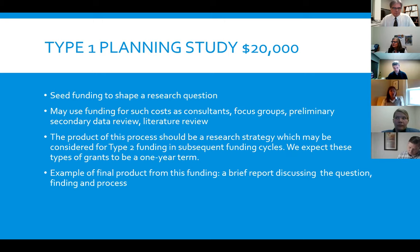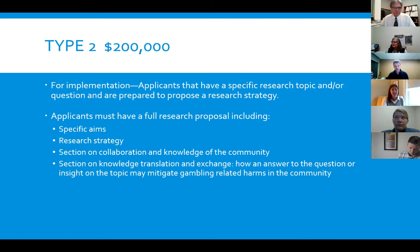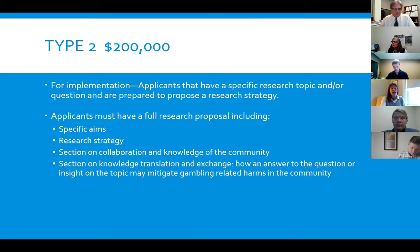Type 1 grants are expected to be a one-year term, with a final product of a brief report discussing the question, findings, and process. Type 2 is for implementation — applicants need a full research proposal including specific aims that state concisely the goals of the proposed research, a summary of gambling-related harms and potential impacts, and a detailed research strategy including approach, methodology, and analyses.